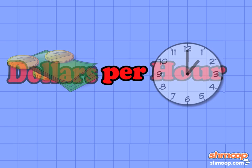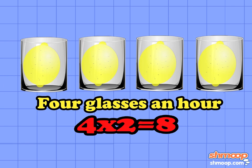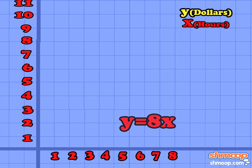So we know that our units should be in dollars per hour. If Marvin sells four glasses at $2 a piece, he'll earn $8 an hour. So the slope of our line is eight.